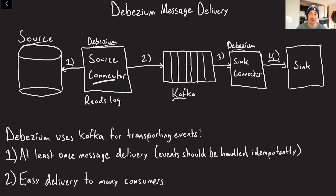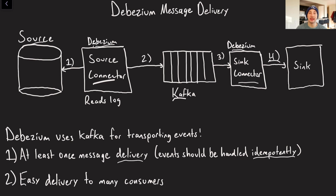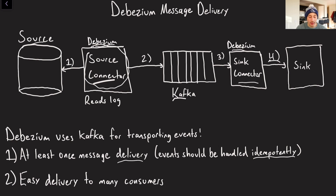The reason we use Kafka rather than just having the source connector send directly to all the syncs comes down to a few things. First, it makes the entire process asynchronous, which is good because these writes can be expensive and hard to process. Second, we get at-least-once message delivery — because Kafka is a log-based message broker, all of those writes are persistent at least for some amount of time. If anything fails in the sync connector, we can just reread the event and retry it. All of these events should be handled idempotently since they're individual database writes. By using Kafka, we can have many consumers reading from that log, and the source connector doesn't have to be responsible for dissipating writes to many different nodes — it's a good decoupling of work.